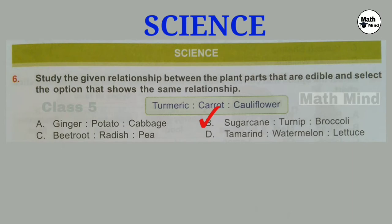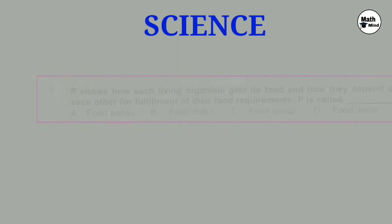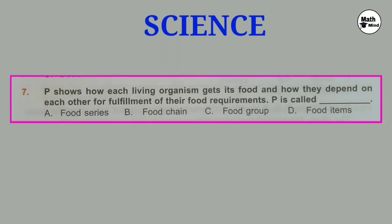Sugarcane is a stem like turmeric. Turnip is a root like carrot. Broccoli is a flower like cauliflower. Question number 7: P shows how each living organism gets its food and how they depend on each other for fulfillment of their food requirement. P is called dash. Correct option is B: Food chain.